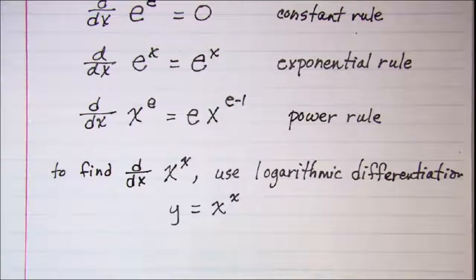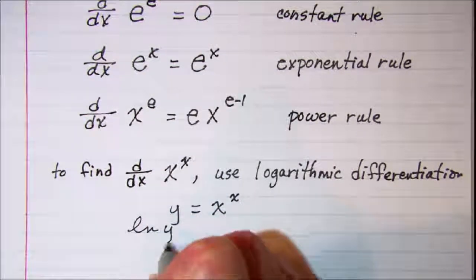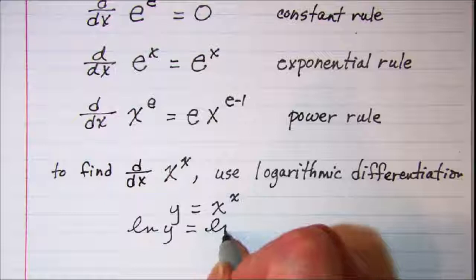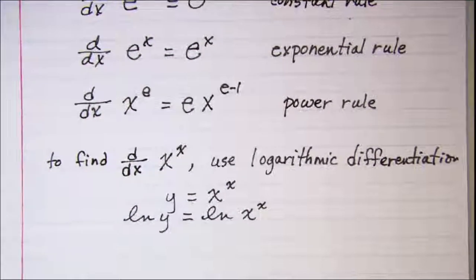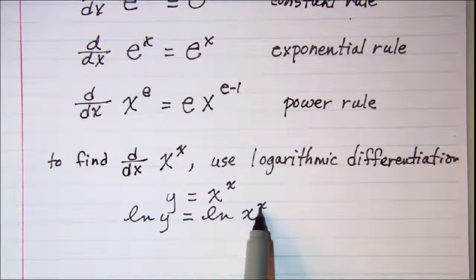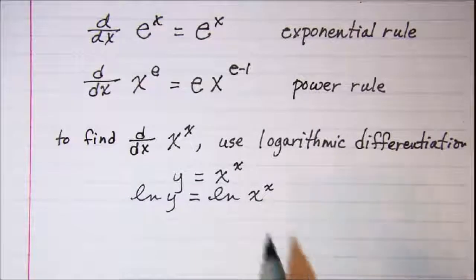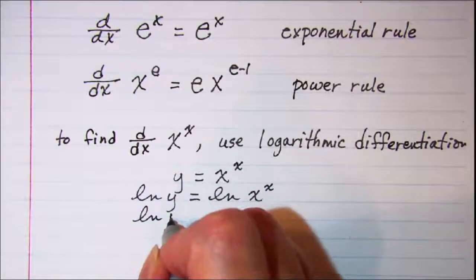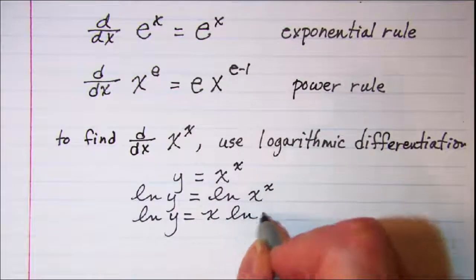And then we're going to take the natural log of both sides, so we have ln y is equal to ln x to the x. Then we're going to use the rule that says we can bring this exponent out in front of the logarithm, so we have ln y is equal to x times ln x.